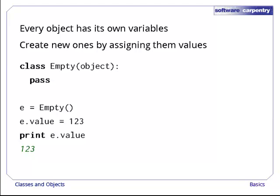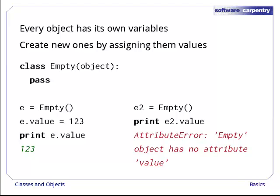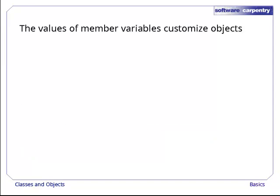Creating a member for one object has no effect on other objects. For example, if we create another object of the class empty and try to print its member value, Python tells us that the object doesn't have one. As you can see, giving different values to different objects is a way to customize them, because the methods in each object class can rely on those values.